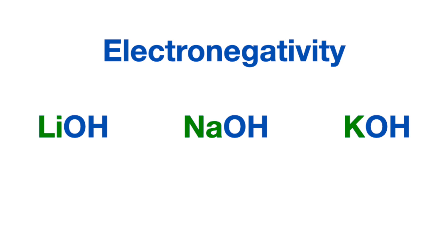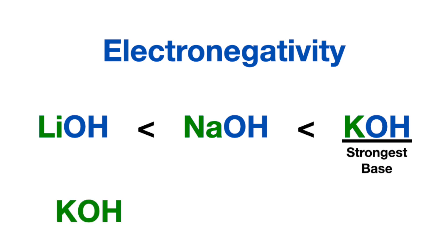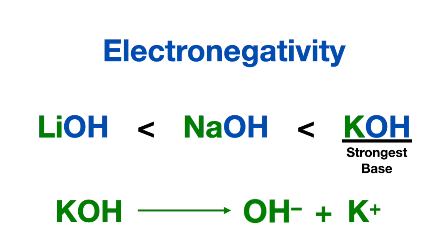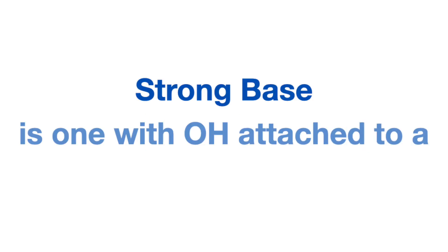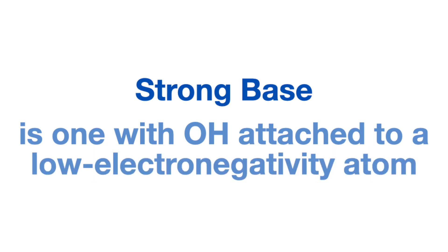So among these bases, lithium has the highest electronegativity, sodium the second highest, and potassium has the lowest electronegativity. So in this case, potassium hydroxide is the strongest base due to potassium's lowest electronegativity, forming the weakest bond with the hydroxide, making it more likely to release the hydroxide as a base into solution, making it more basic. So a strong base is one where the hydroxide is attached to an atom with a low electronegativity.